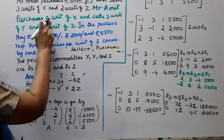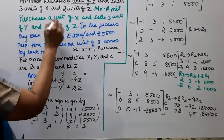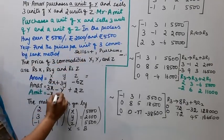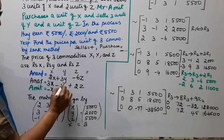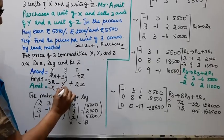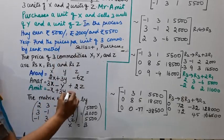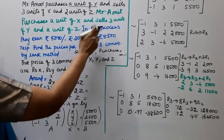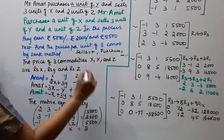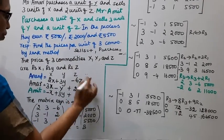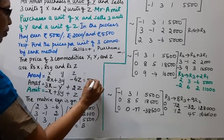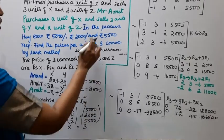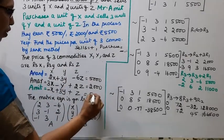Mr. Amit purchases 1 unit of X, so minus 1X, and sells 3 units of Y and 1 unit of Z. The earnings are: Anand earns 5,000; Amir earns 2,000; Amit earns 5,500.